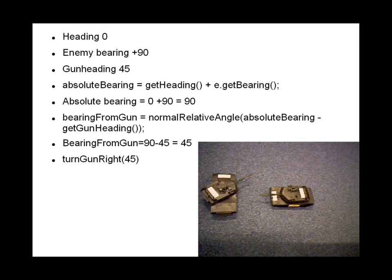The absolute bearing therefore is the heading plus the bearing, which is 0 plus 90, which is 90 degrees. The bearing from the gun is the bearing minus the gun heading, which is 90 minus 45, which is 45 degrees.